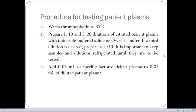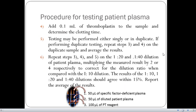And if a third dilution is desired, prepare a 1 is to 40 dilution. And it is important to keep the samples and dilutions refrigerated until they are tested. For number third, we have to add 0.05 ml of specific factor deficient plasma to 0.05 ml of patient plasma.